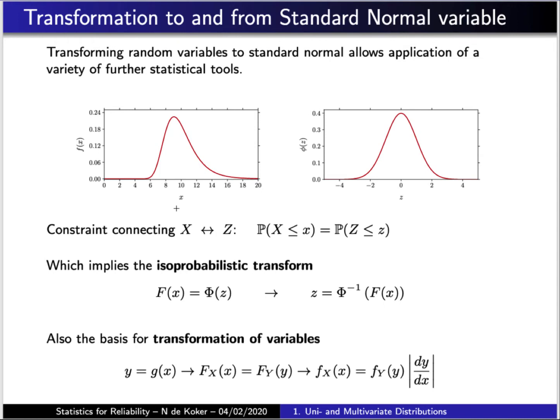The central requirement to allow us to do this is that for any given value of x, the probability associated with that value of x — which is to say the probability of the random variable being smaller than or equal to a particular value of x — should be equal to the probability of a corresponding z value. This isoprobabilistic condition needs to hold.